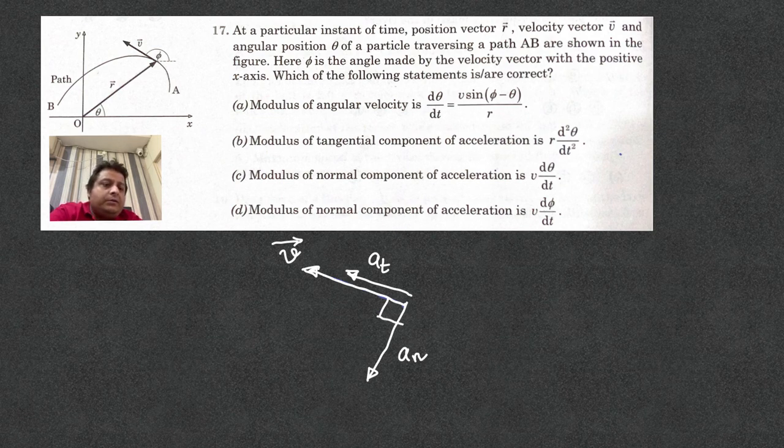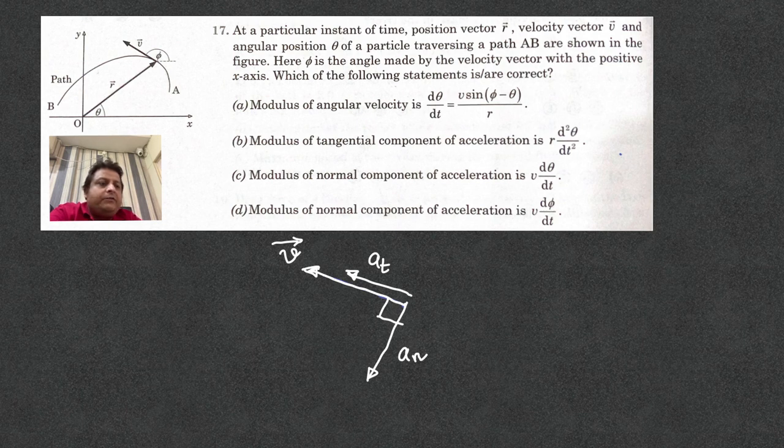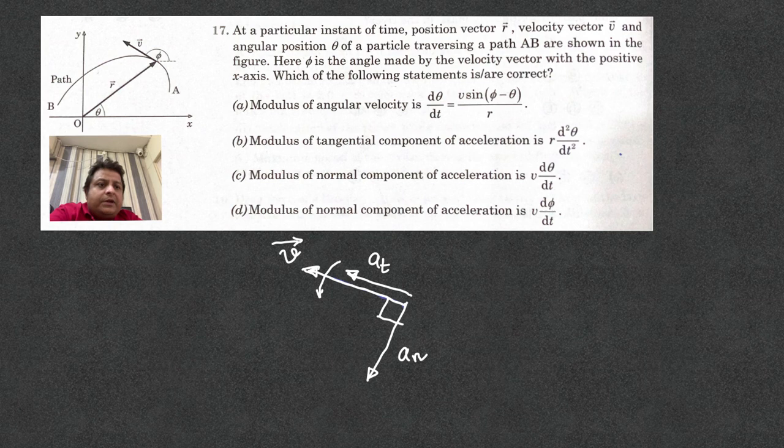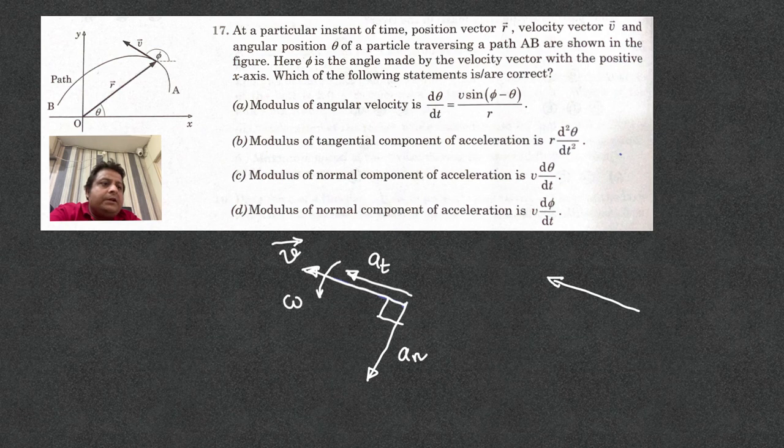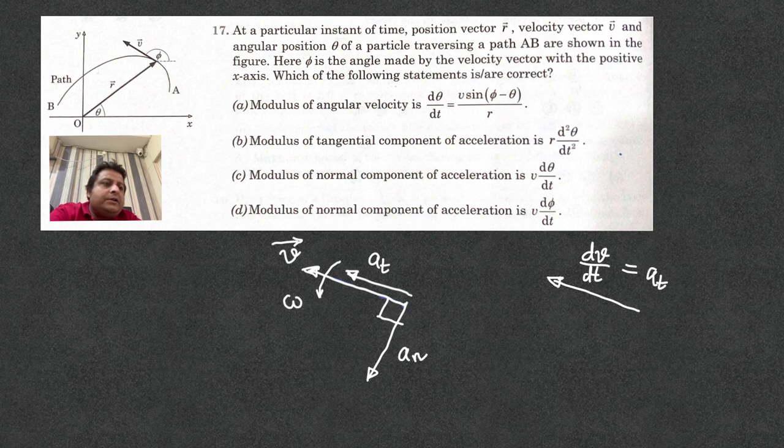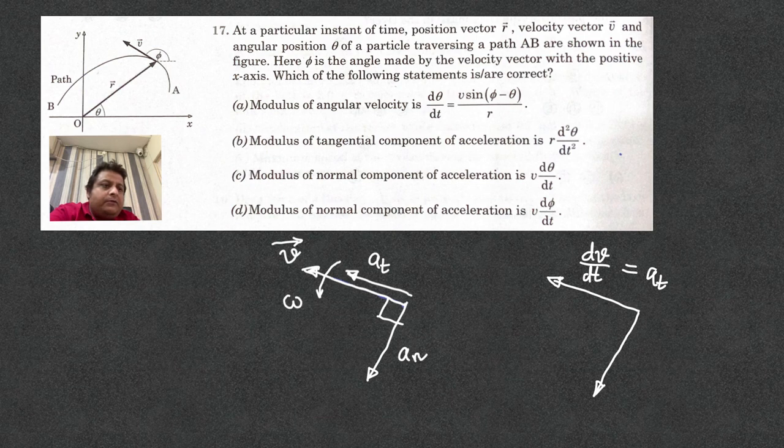Normal component means the component which is perpendicular to v. So, if you calculate the rate of change, if this v vector rotates with an angular speed of omega, then the tangential acceleration is dv dt. dv dt happens to be the tangential acceleration and v omega happens to be the normal acceleration.